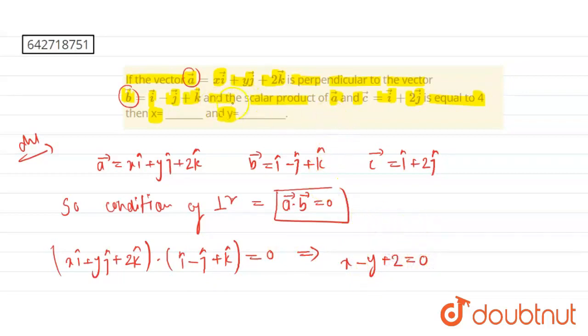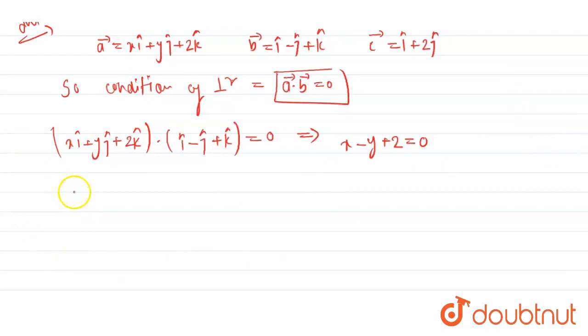And the question given is scalar product of A and C, which is equals to 4. So now we have A dot C equals 4. So xi cap plus yj cap plus 2k cap scalar product with C, where C equals i cap plus 2j cap, which equals 4. So here we have x plus 2y equals 4.